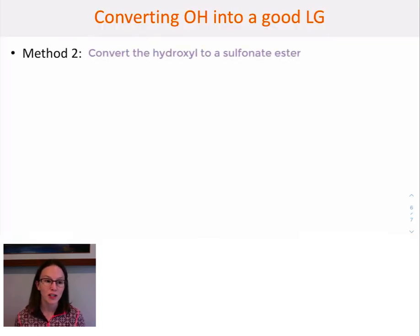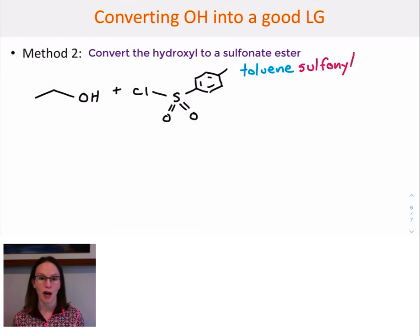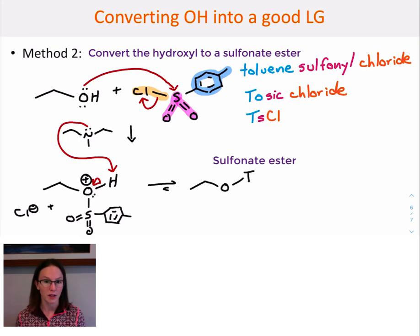So method two involves converting the hydroxyl group into what's known as a sulfonate ester. And sulfonate esters become excellent leaving groups. They're essentially analogous to sulfuric acids. And so the way that we do that is we take a sulfonyl chloride, and essentially that hydroxyl group now becomes the nucleophile can undergo an SN2 reaction in the presence of a base to end up with the sulfonate ester.